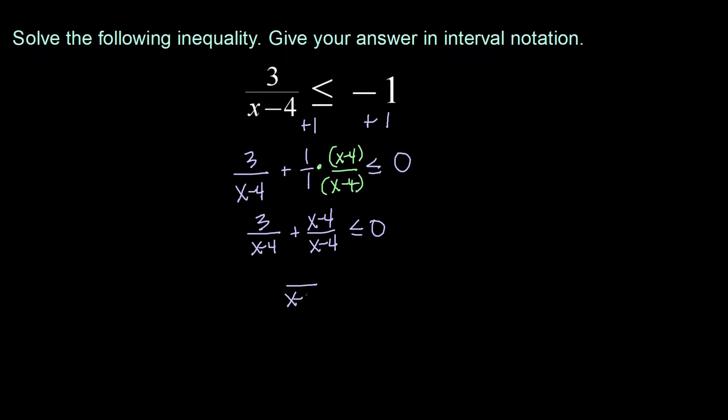Since my denominators are the same I can go ahead and combine my numerators. So that gives me x minus one from three plus negative four giving me negative one is less than or equal to zero.